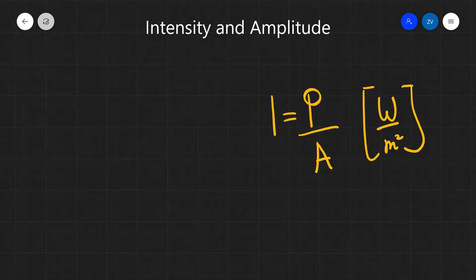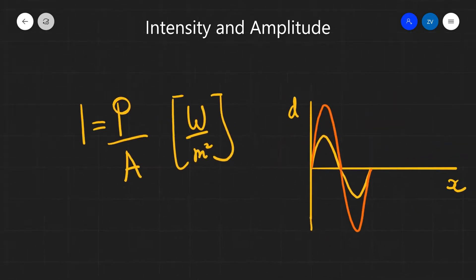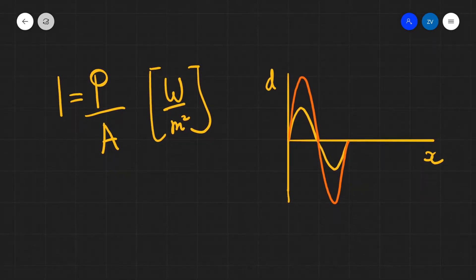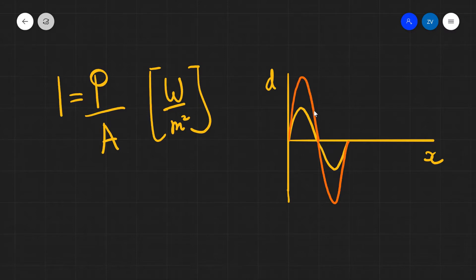Now let's see how the intensity of a wave depends on its amplitude. Let's have a look at two waves. The amplitude of one of the waves is clearly double the amplitude of the other. We can see that this orange wave has twice the amplitude compared to the yellow wave.